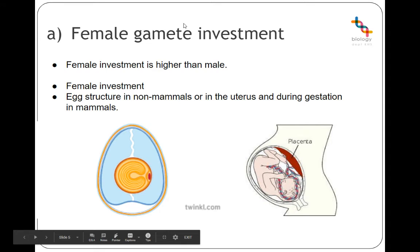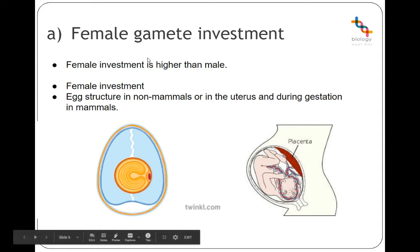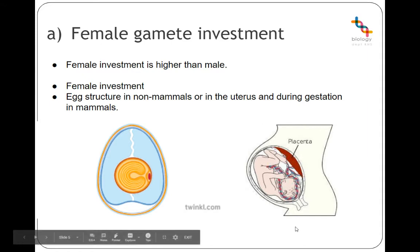Female gamete investment: females will always invest more gamete-wise in the offspring than males. In non-mammals, the female has to make the egg's coat and shell, and the energy store — the same applies in seeds, where the female plant produces the food store for seed growth. In placental mammals, females have to feed the developing offspring via the placenta, using their own resources, and get rid of all the waste products. They also carry the offspring to parturition, which increases the chance of predation.